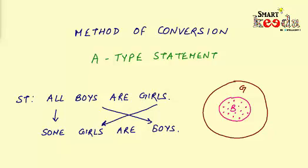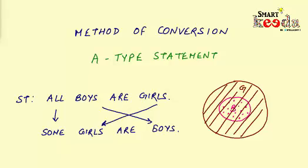You can clearly see that while all the dots are being overlapped by the lines, only some lines are overlapped by the dots. Therefore, the definite conclusion of the statement 'all boys are girls' will be 'some girls are boys.'